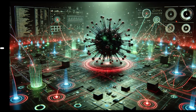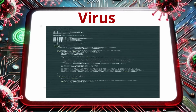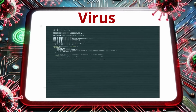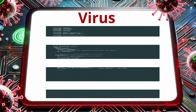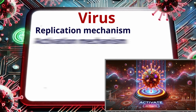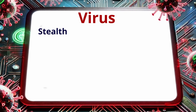First, let's look at viruses. A virus is a string of code that's attached to a file and spreads to other files. Viruses have three key characteristics: a replication mechanism, an activation mechanism, and an objective. Viruses are actually very difficult to nail down. They're very stealthy in nature and they come in many different forms, so it's hard to identify them.